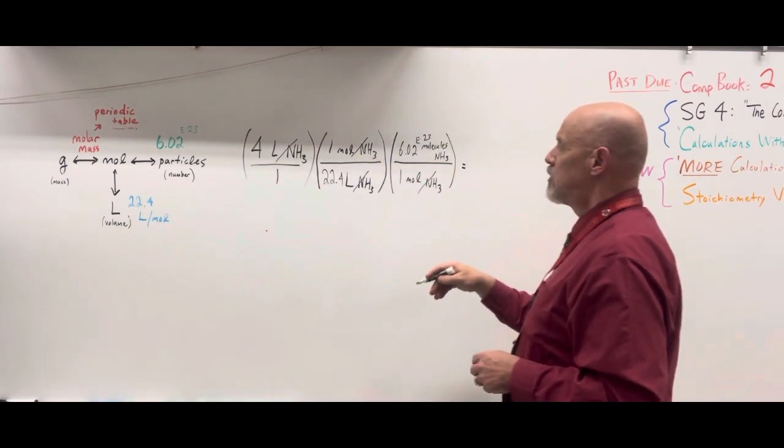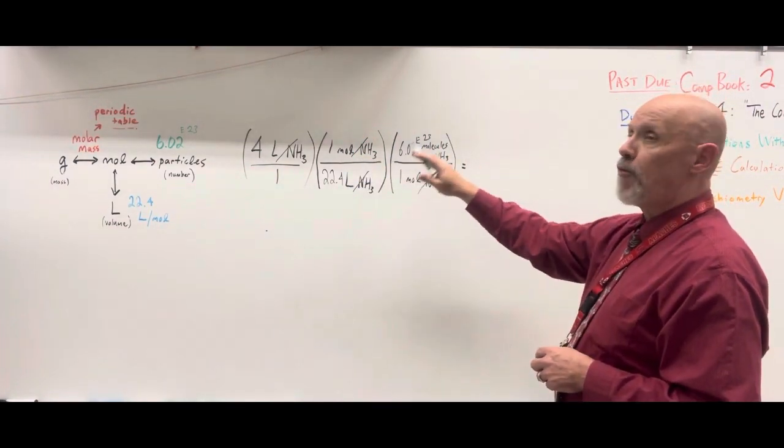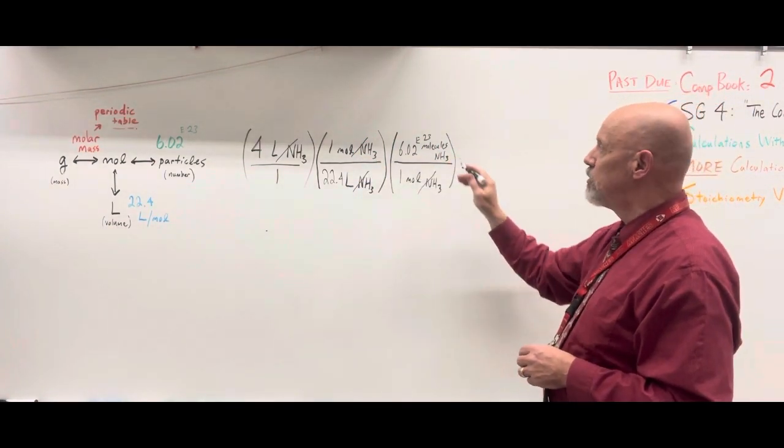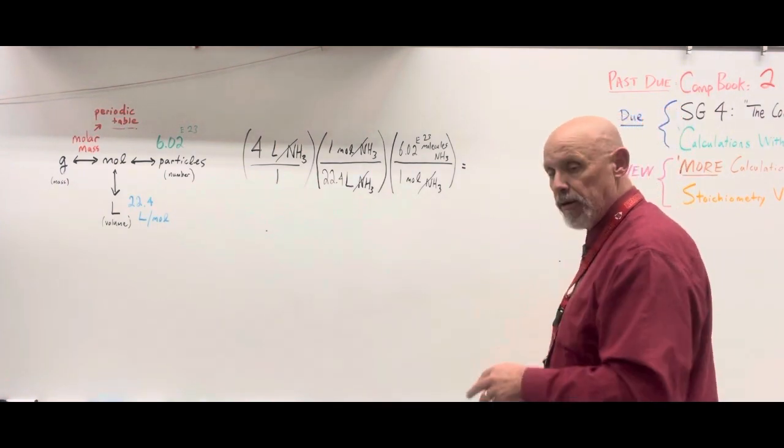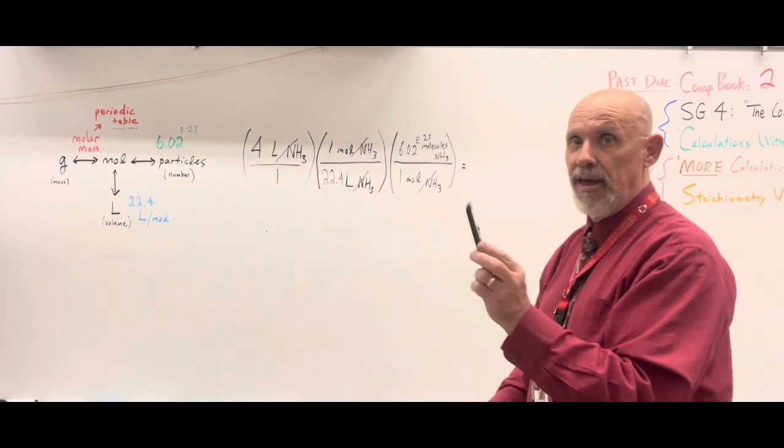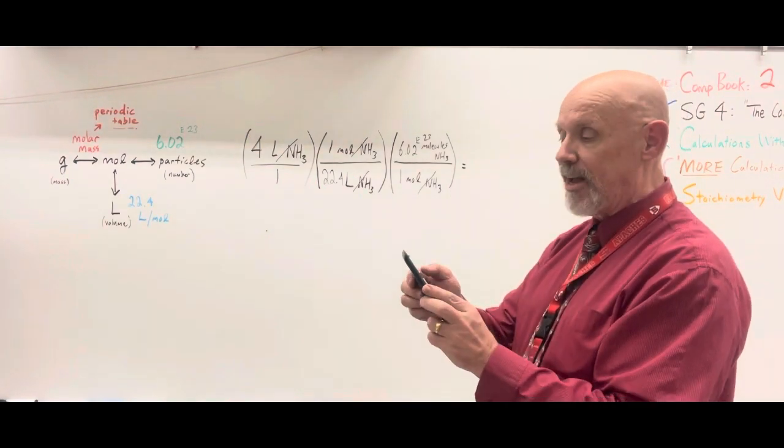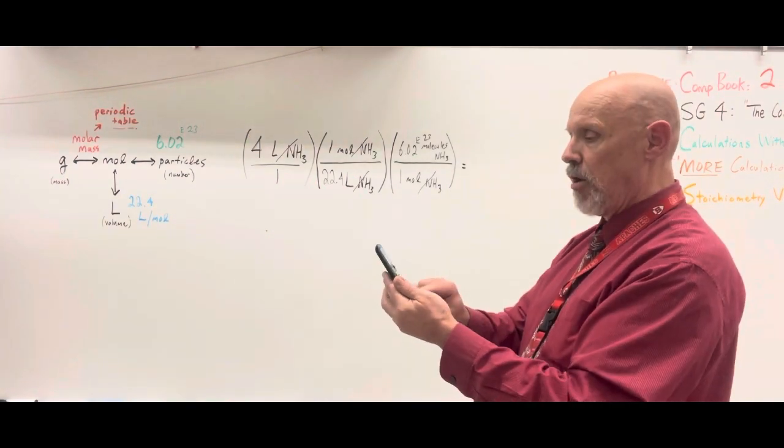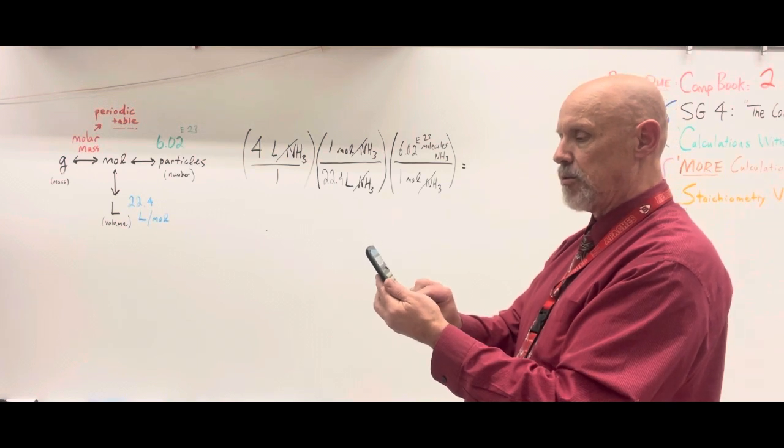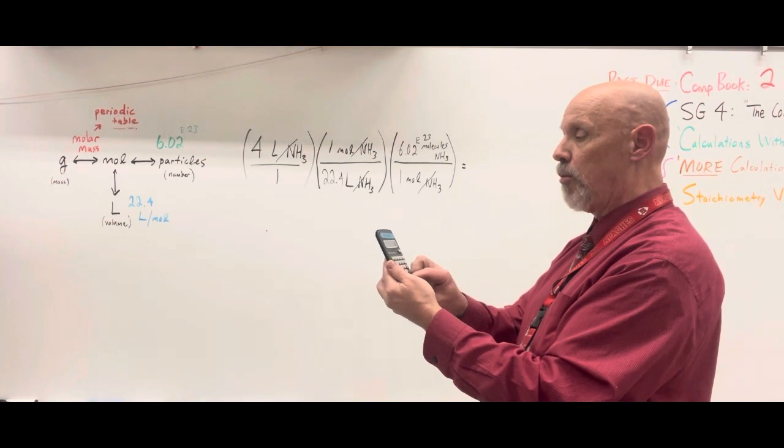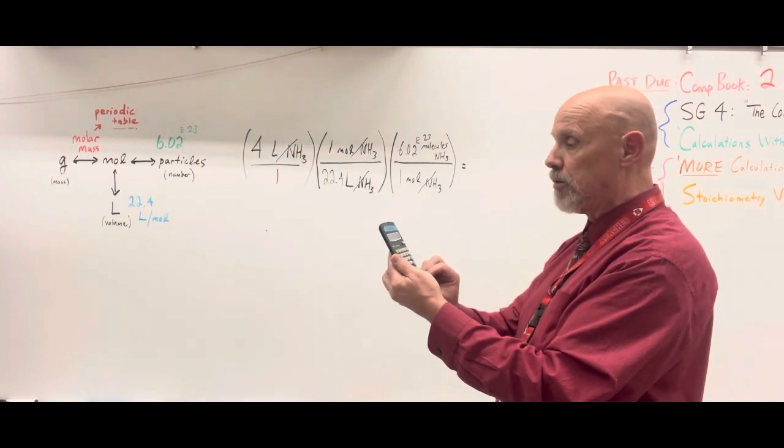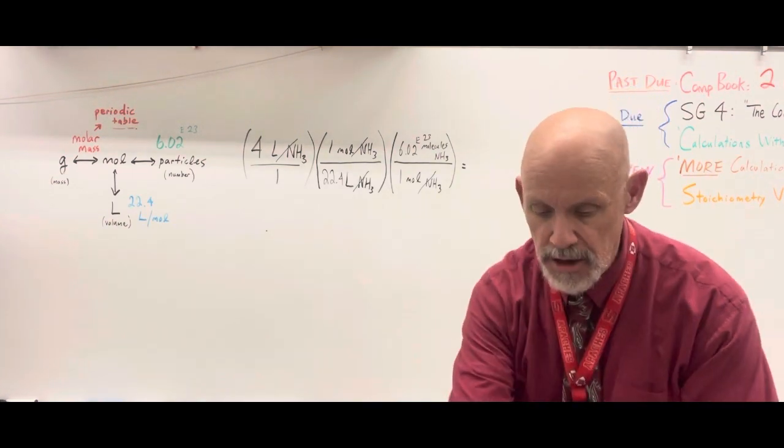and the whole thing divided by 22.4. Okay. Thin plastic rectangular device can come in handy here. 4 times 6.02 times 10 to the 23rd, and that entire thing divided by 22.4. We don't care about the ones. They're all placeholders. And we end up with this number.